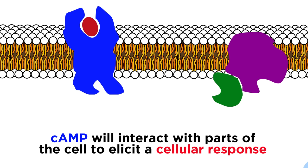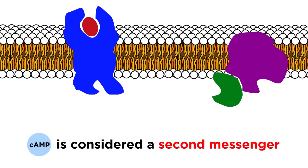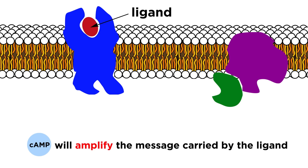That will then diffuse within the cell and elicit a cellular response. These are called second messengers, because they are different molecules from the ligand that first activated the receptor, but they carry the message into the cell and amplify it, since they will be more numerous than the one molecule that initially made it to the receptor.